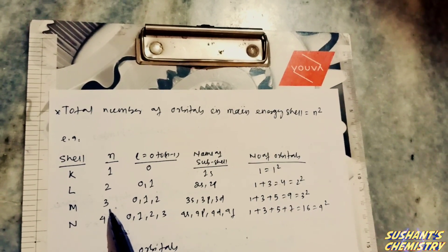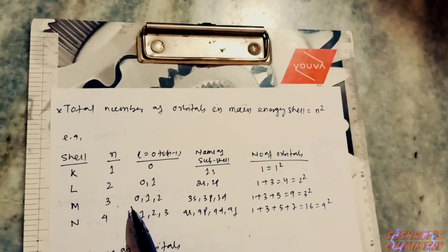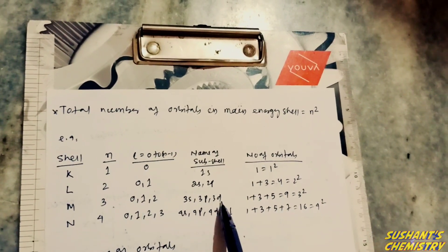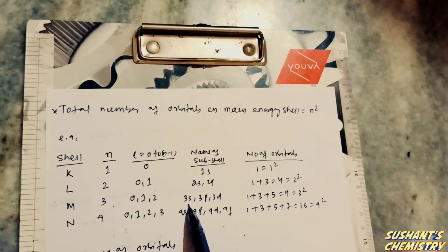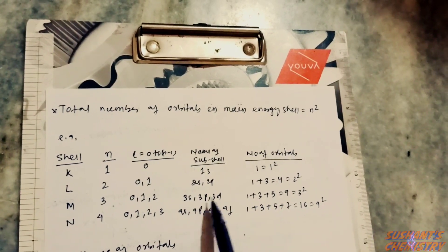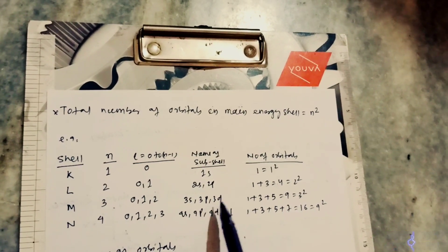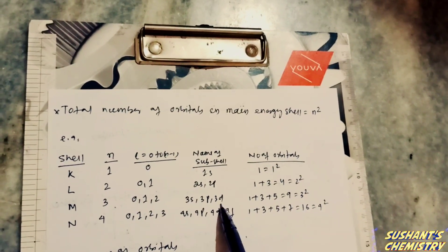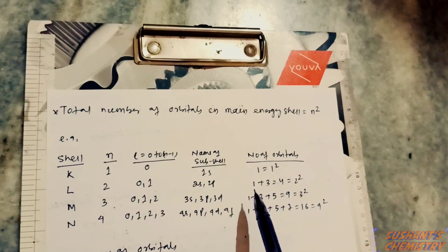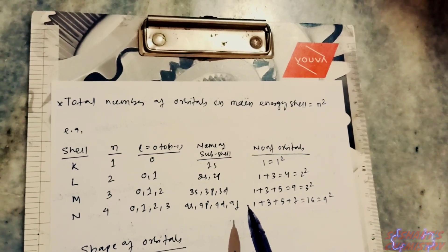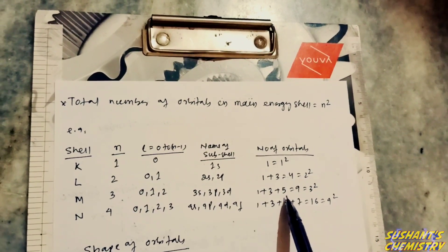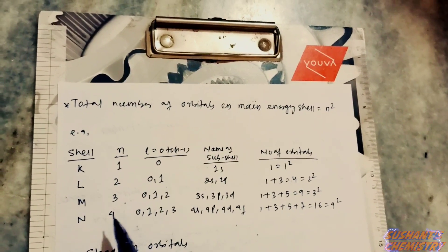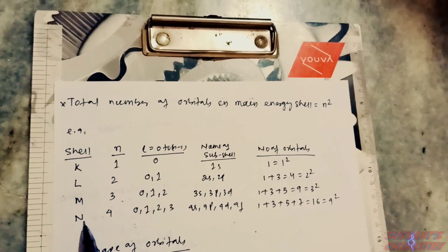For the M shell, n equals three. Putting three in the formula gives l values of zero, one, and two. The subshells present in the M shell are 3s, 3p, and 3d. The 3s has one orbital, 3p has three orbitals (3px, 3py, 3pz), and 3d has five orbitals (3dxy, 3dyz, 3dzx, 3dx²−y², 3dz²) — giving nine total orbitals, that is three squared.